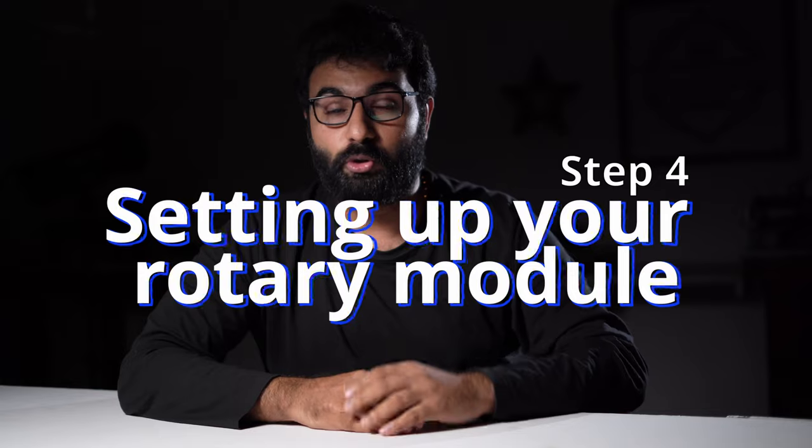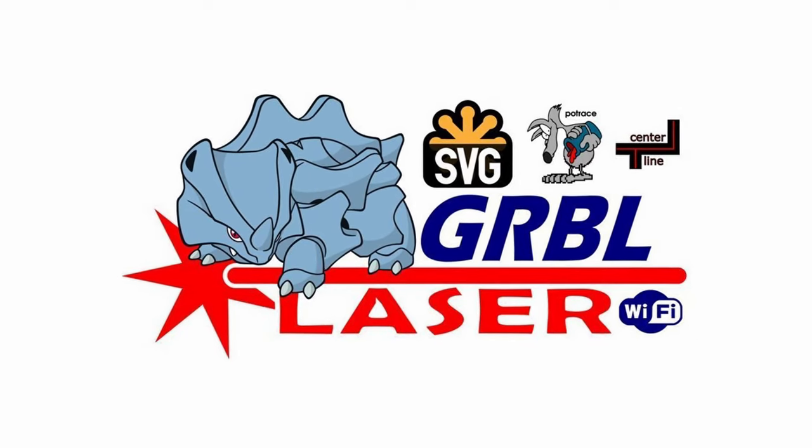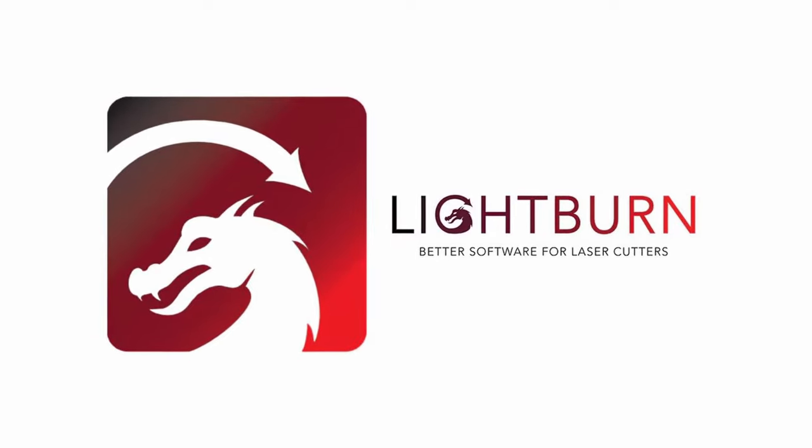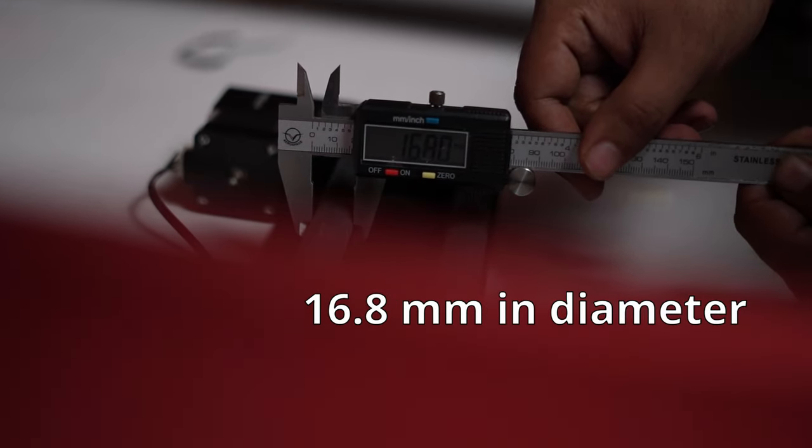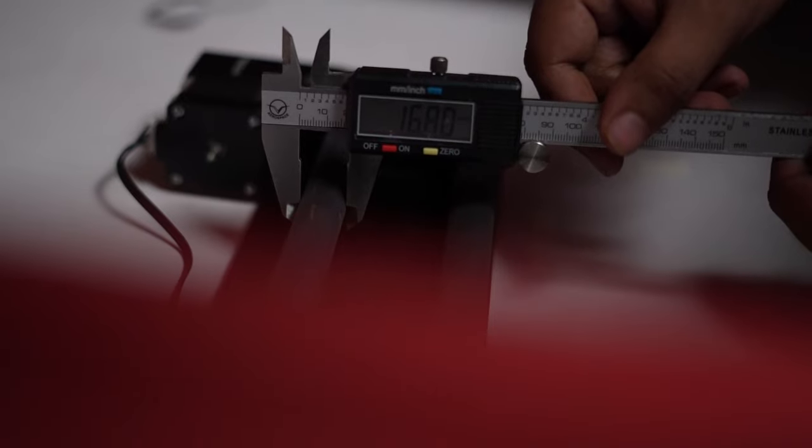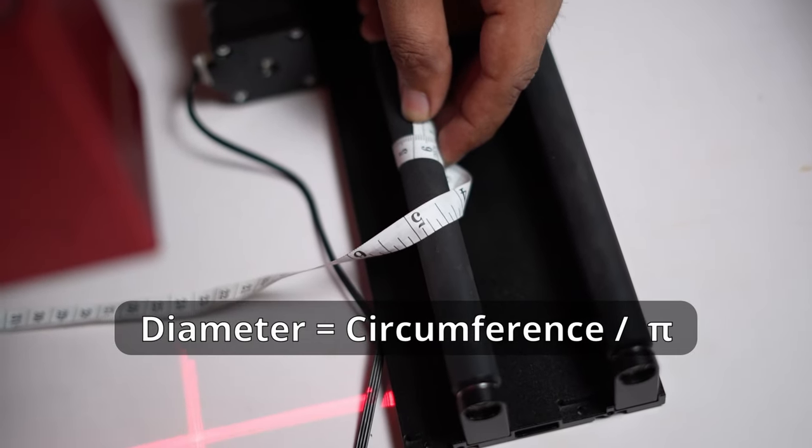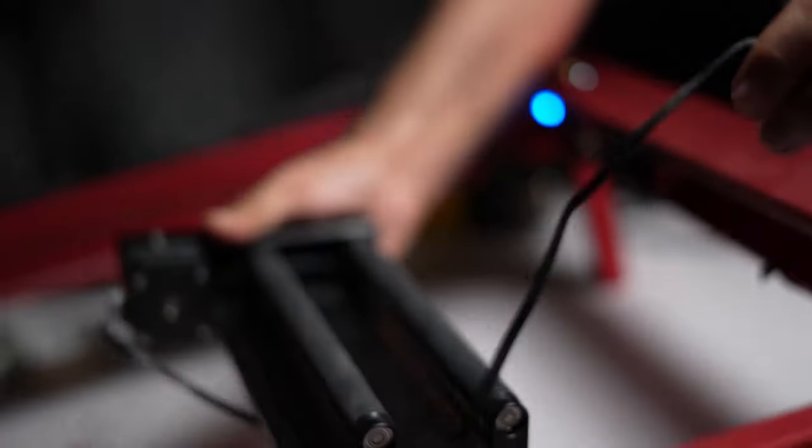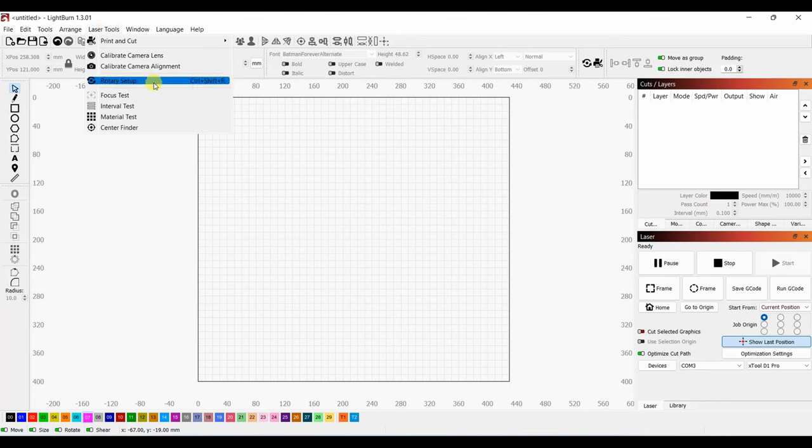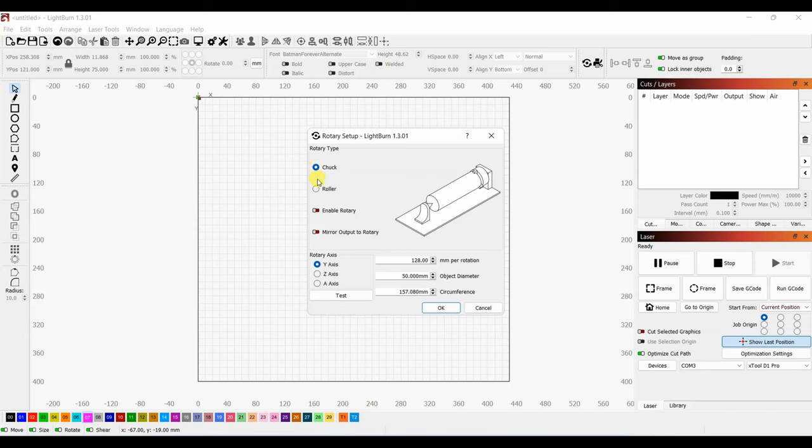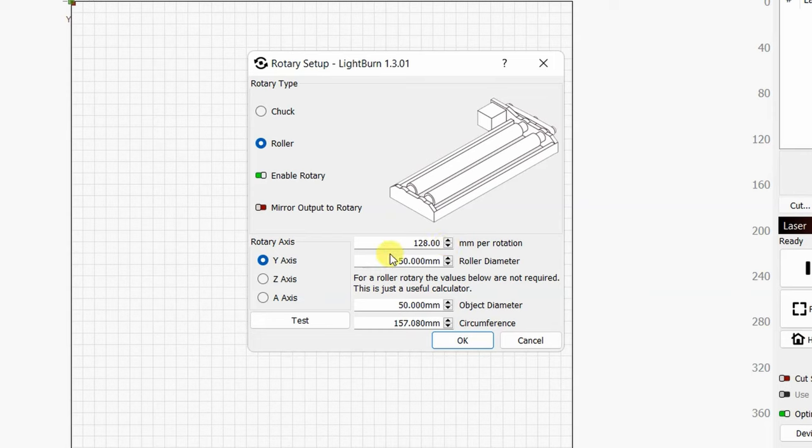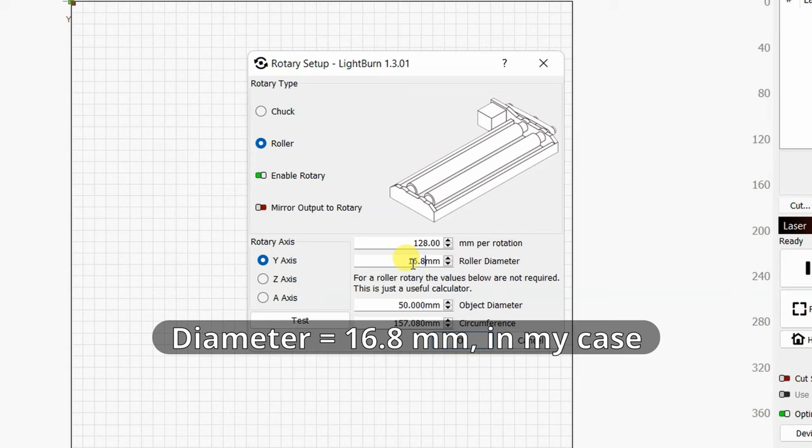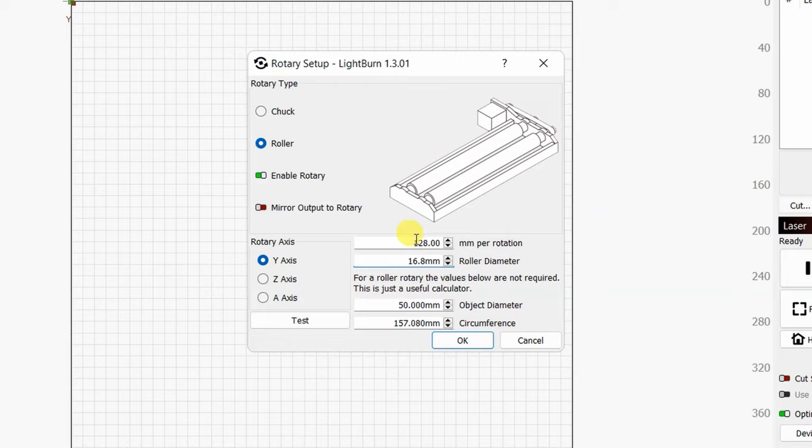The actual fourth step is setting up your rotary module. Now you can use laser gerbil to run your projects but I prefer Lightburn. It gives you a lot more options to work with. The first thing I do is take a measurement of the roller I am using. In my case, it's 16.8mm in diameter. You can use a caliper or measure the circumference and divide it by pi. Then I set the rotary parallel to my x-axis. Now on Lightburn, go up to the laser tools menu. Click on rotary setup. Here select roller or chuck whichever you have. Rollers are better for engraving bottles. Once you have that, click on enable rotary. If you select rollers, you will see this box called roller diameter. Here type in the diameter of your roller. It's 16.8mm in my case. The other thing you need to set is the millimeter per rotation.